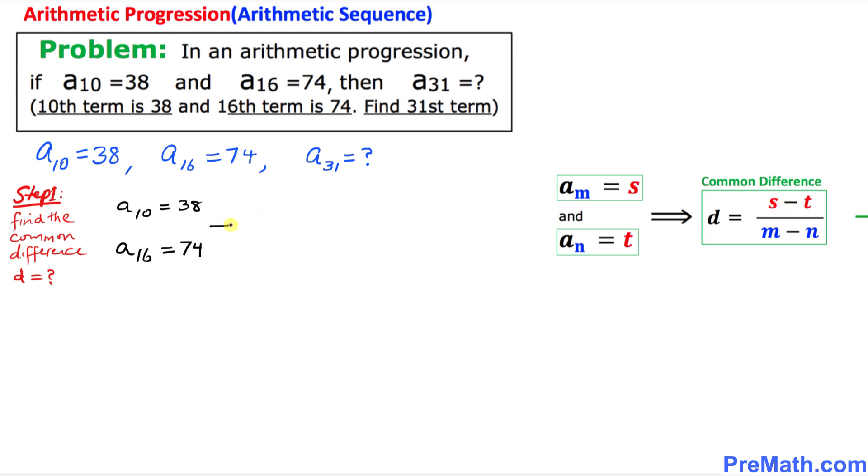In other words, this given information can lead us to the common difference equals to, in our case, s is 38 minus t is 74 divided by m is 10 minus n is 16. Let's simplify this thing so on the top that is going to give us negative 36 and at the denominator is going to be negative 6, so that means our d turns out to be positive 6.